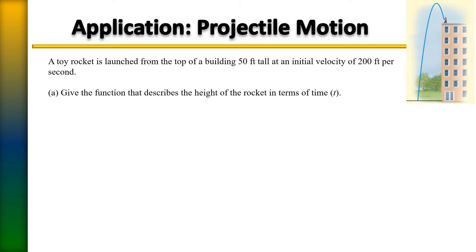Now, if air resistance is neglected, the projectile height function is as follows: negative 16t² plus the initial velocity plus the initial height. So if we look at the sentence here, we were given an initial height here of 50 feet and an initial velocity of 200 feet. So all we need to do is go ahead and plug that information in.